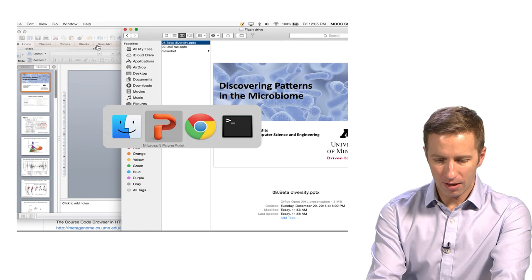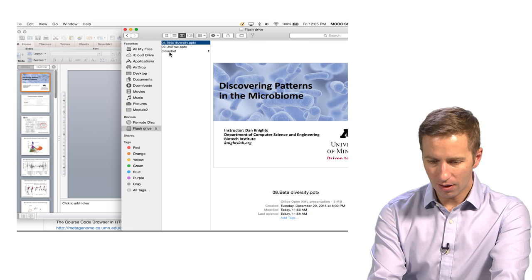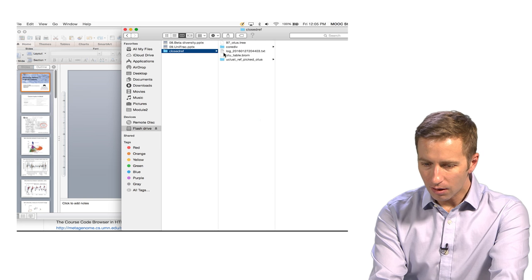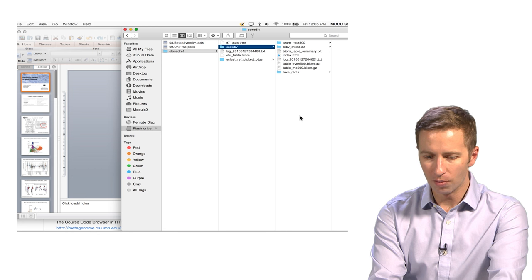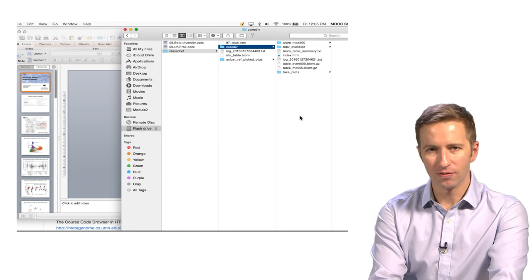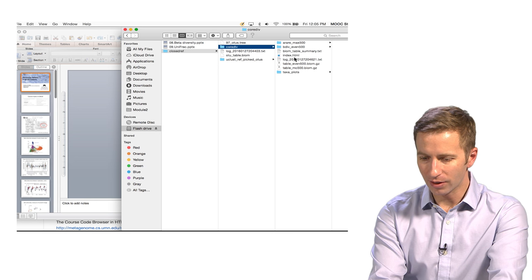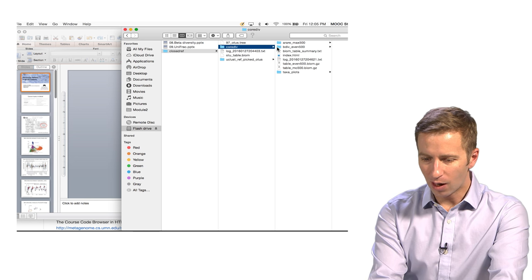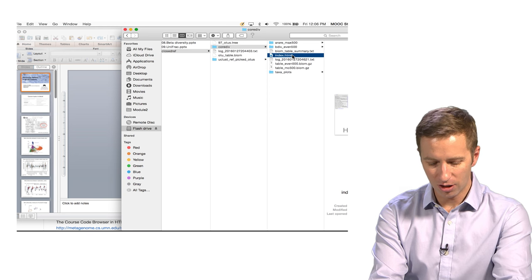So I'm going to show you the output from this. In this particular analysis, this is of the global gut data. It's actually a subset of 66 adults that I pulled out. And you'll see in this output folder, there's an index.html.